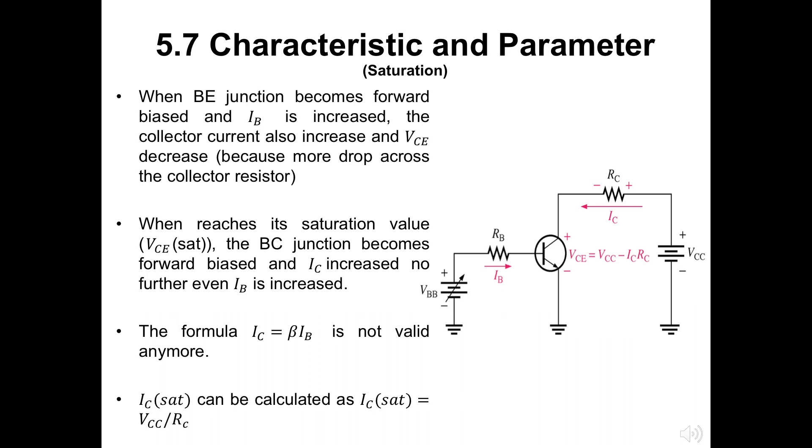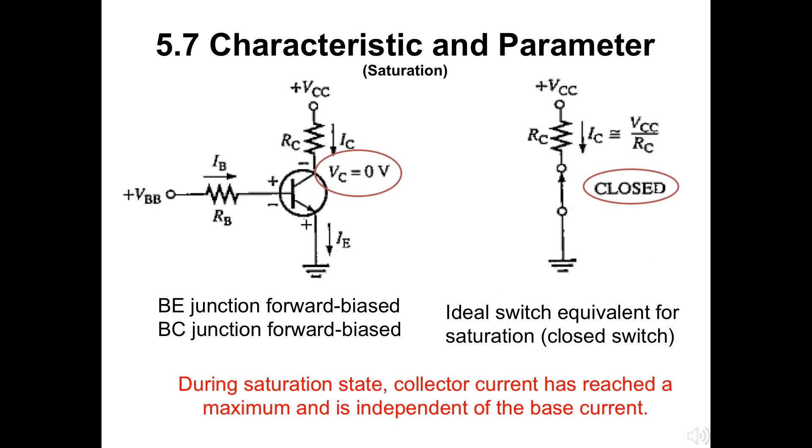The IC(SAT) can be calculated as VCC by RC. Here we have two figures describing the saturation for a transistor. On the left hand side, BE and BC junction are both forward biased, while on the right hand side shows the ideal switch equal to this saturation which is the closed switch network.